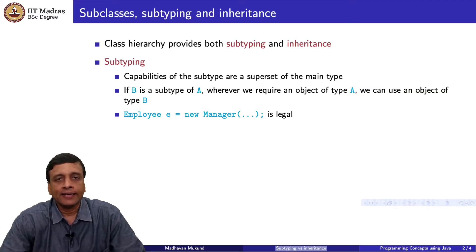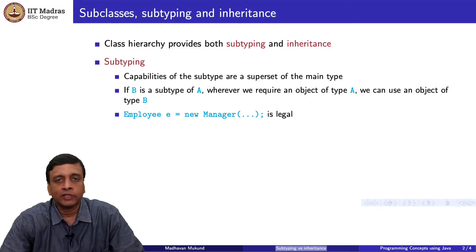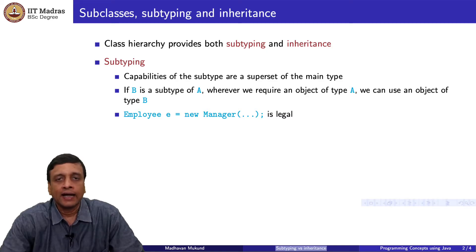Subtyping effectively captures when one type has more capabilities than another type. When we have a subtype, it can do everything that the parent type can do and possibly more. So wherever we expect an object of the parent type — if B is a subtype of A and we declare a variable to be of type A — then we can always substitute at runtime an object of type B, because B has at least the capabilities of A and more. Any function that we want to invoke on an object of type A will also be available on an object of type B.